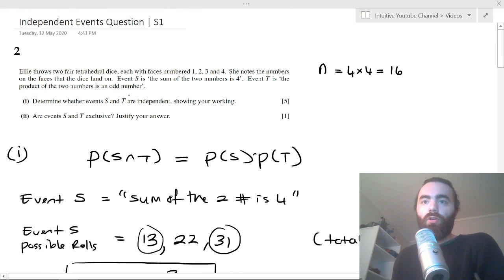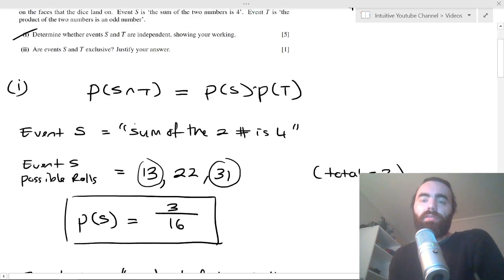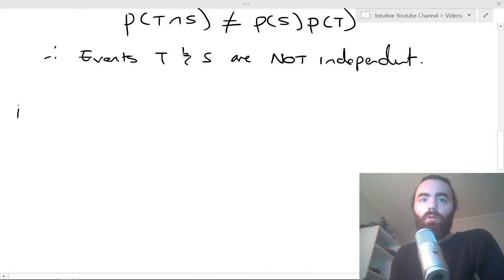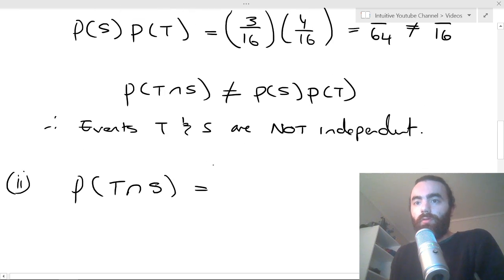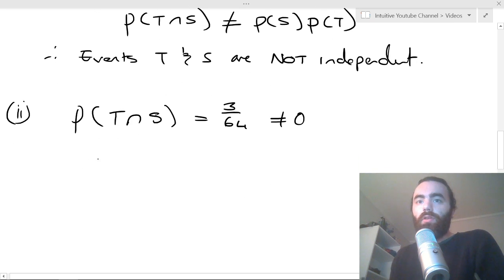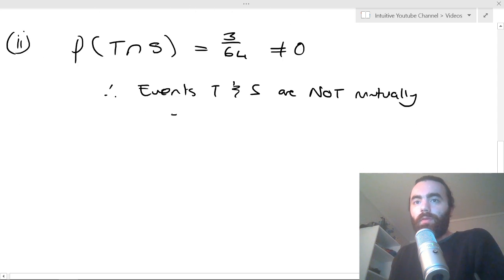Cool. So we showed that they're not independent. And then it says quickly here are the events S and T mutually exclusive? Well, we know if you look on the worksheet that they will be mutually exclusive if this equals 0. But this actually equals 3 over 64, which is not equal to 0. So therefore, events T and S are not mutually exclusive.